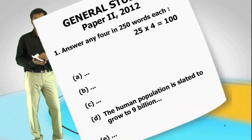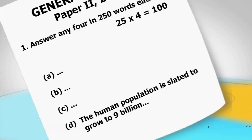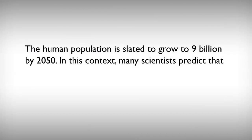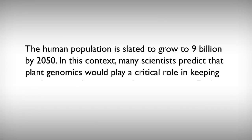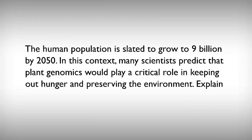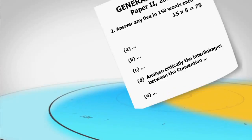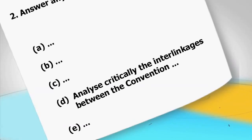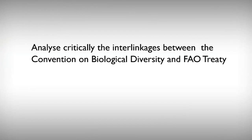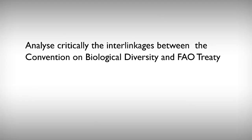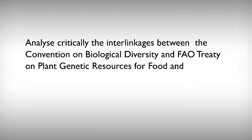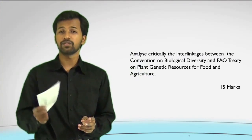The questions I've picked up are from the general studies paper of the 2012 main exam — a 300 mark paper. The first question is: 'The human population is slated to grow to 9 billion by 2050. In this context, many scientists predict that plant genomics would play a critical role in keeping out hunger and preserving environment. Explain.' The second question asks to critically analyze the interlinkages between the Convention on Biological Diversity and the FAO treaty, which is the International Treaty on Plant Genetic Resources for Food and Agriculture.